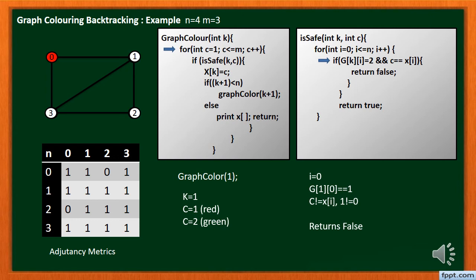It returns true which means this given color is safe for node 1. Then give this color to node 1, that is we give green color to node 1.